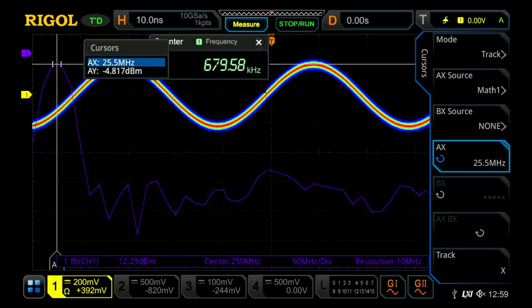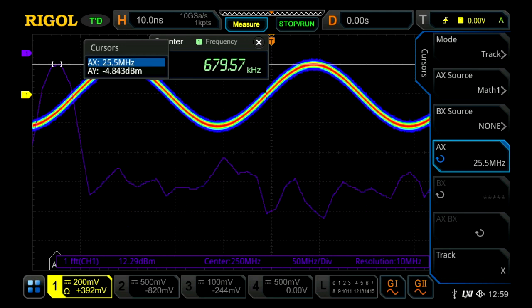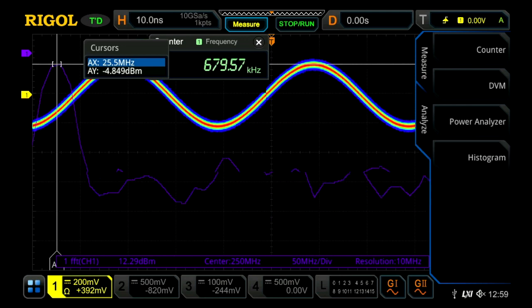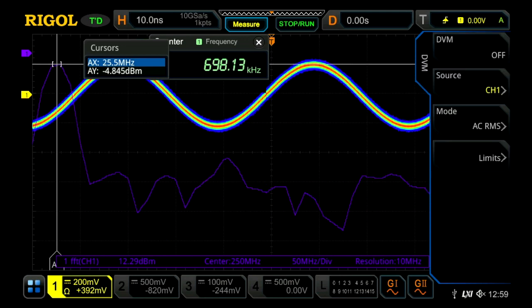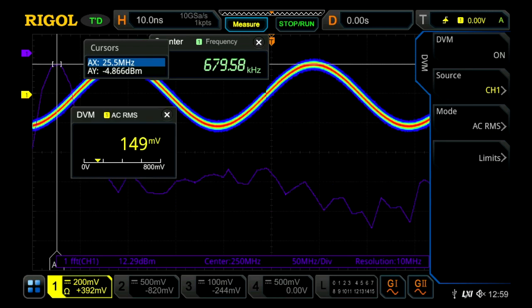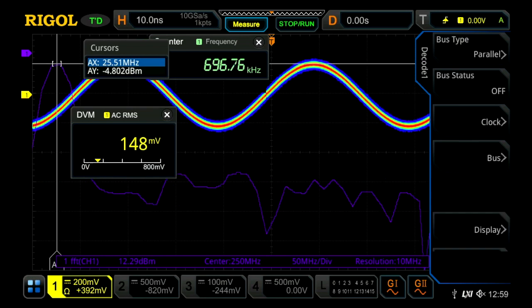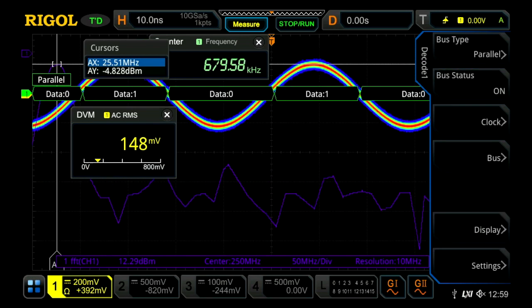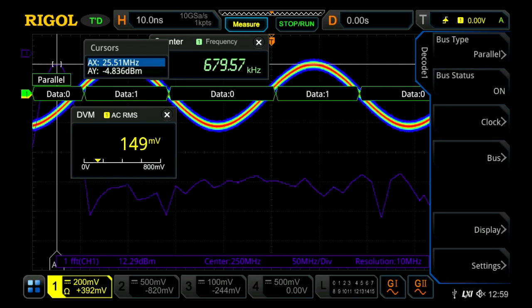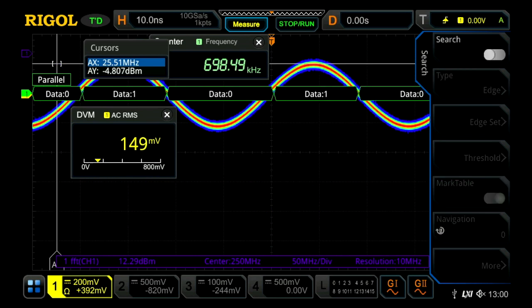Now let's see what else we can turn on as we continue to work on this. Let's turn on some measurements like our digital voltmeter. We can turn that on as well. Now we can go ahead and let's add some serial decode capabilities. So we just do serial decode on that underlying sine wave there in a little parallel bus mode.